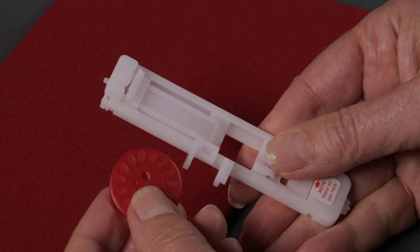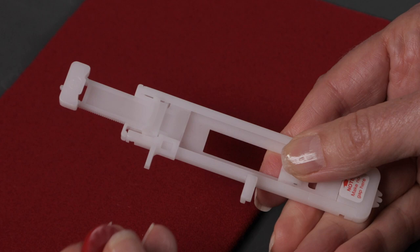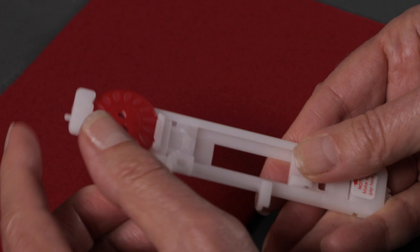Next we're going to place our button in the buttonhole foot. To do that I'm going to open up this slider at the back of the buttonhole foot, place the button in position, and close the slider.